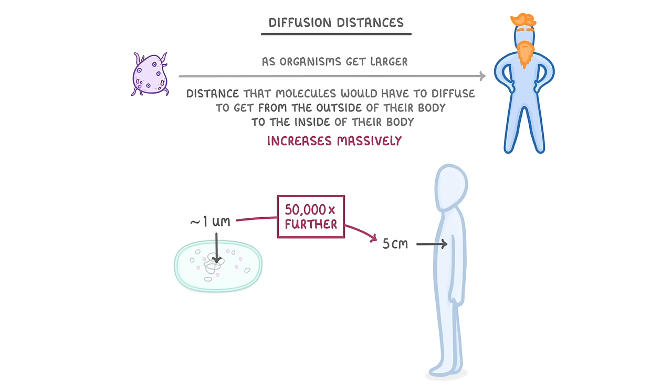This is really important because it means that diffusion will be way slower for larger organisms, and so they won't be able to rely on diffusion alone to get all of the stuff that they need into their cells.